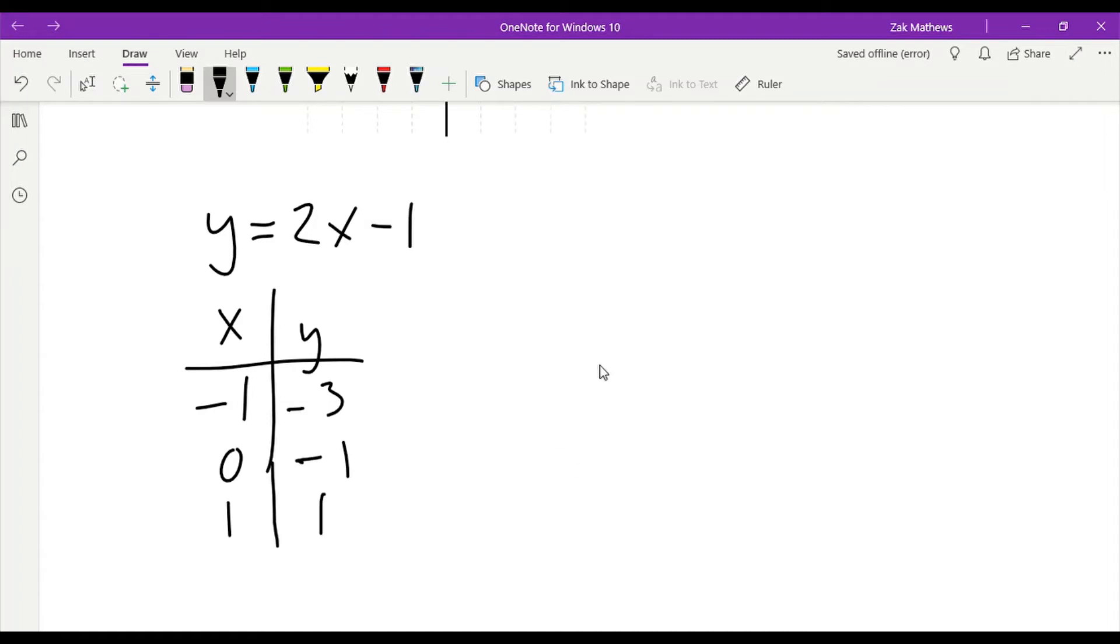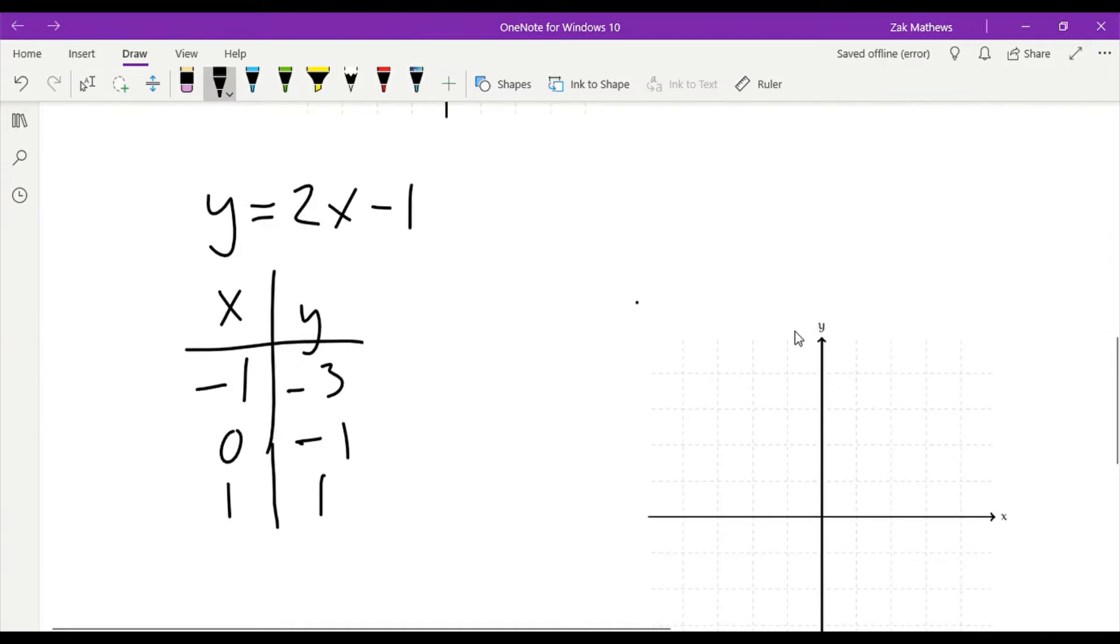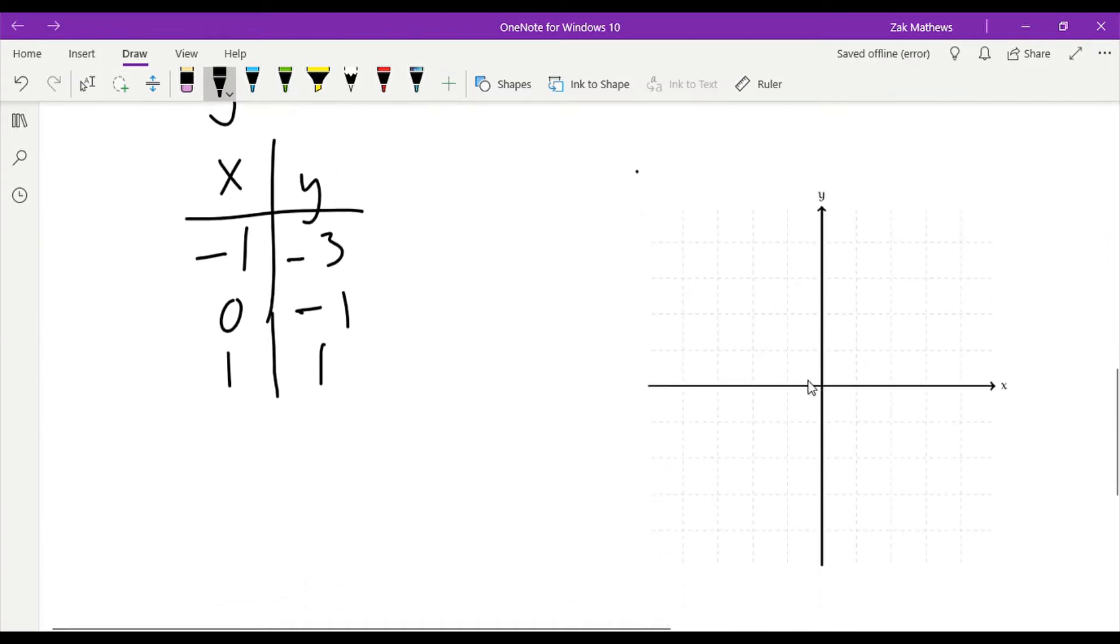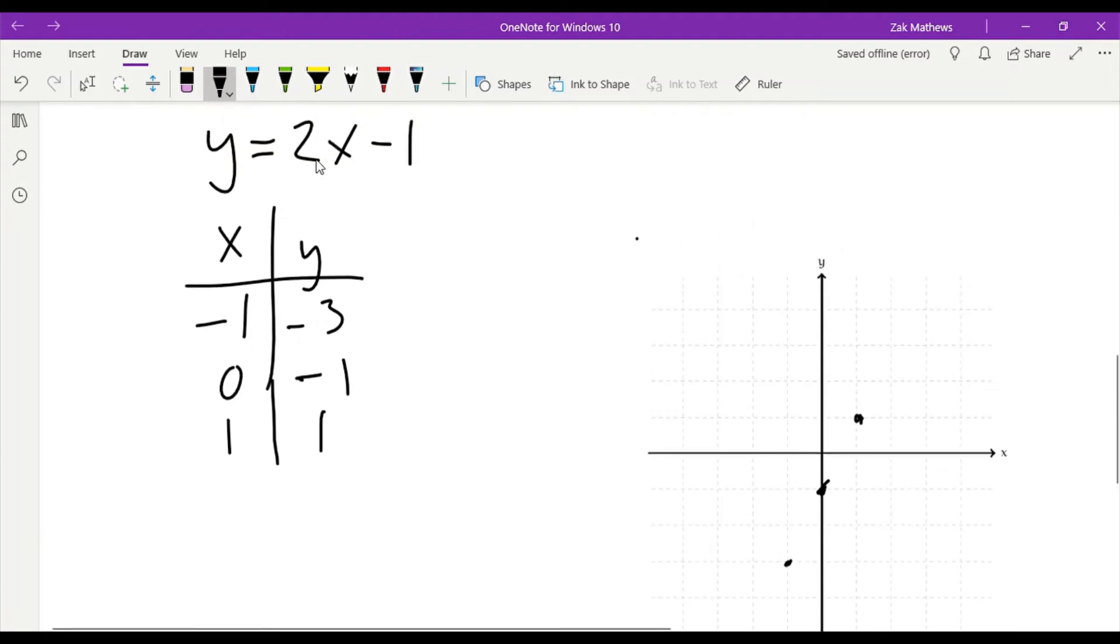Now I have a list of points that I can plot on my xy-axis. Negative one is my x value, negative three is my y, so that's my first point. Zero negative one. There's my second point. Then one one. There's my third point. All three of these points fall on a straight line. If I'd made a calculation error, maybe when I plug the zero in I get one instead, that would be this red point, and I can't connect those with the line. So that's a good indication I made a mistake. That's the value of doing three points.